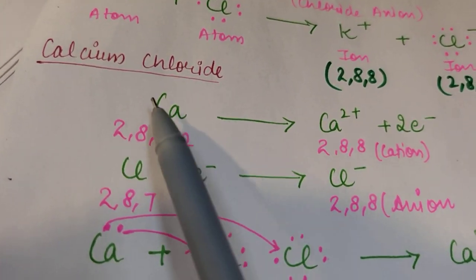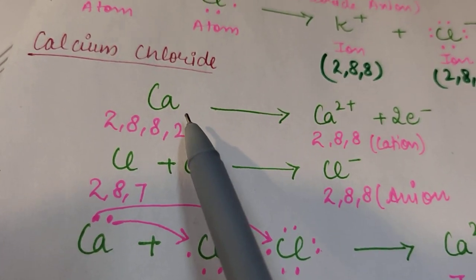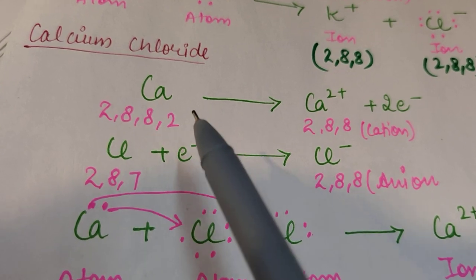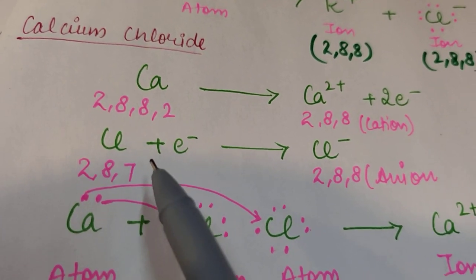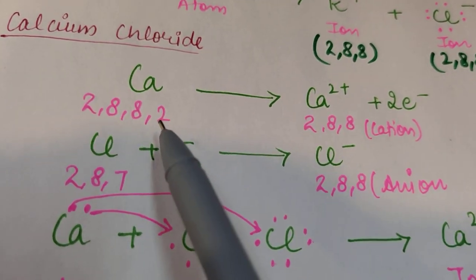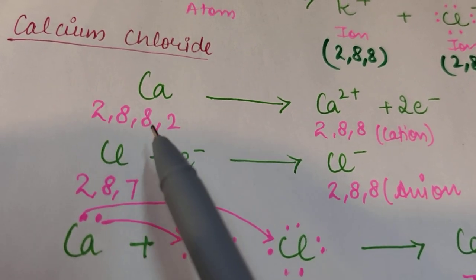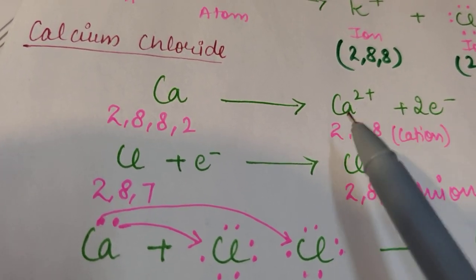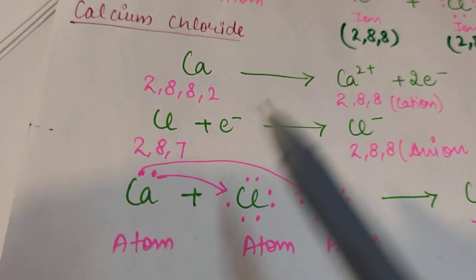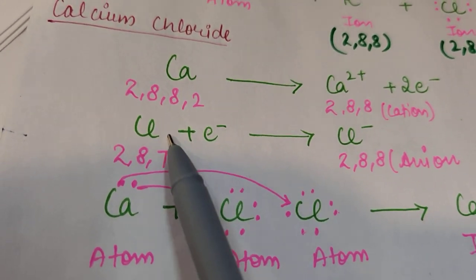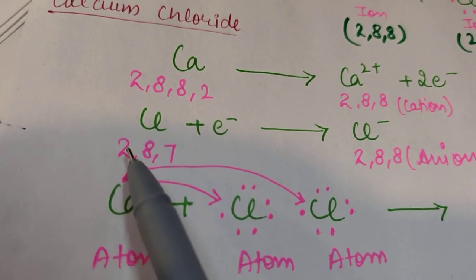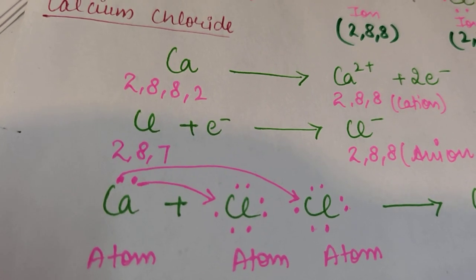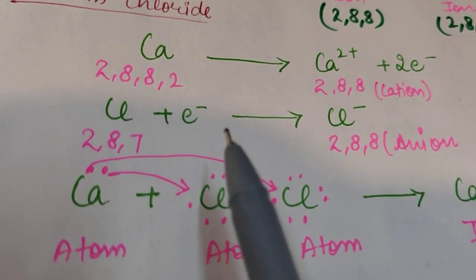Now let's look at one more example — calcium chloride. Calcium has the configuration 2,8,8,2 and chlorine is 2,8,7. Calcium has two extra electrons beyond the noble gas configuration, so it releases those two electrons and forms a Ca²⁺ cation with 2,8,8 configuration. Chlorine has one electron less than the noble gas configuration.